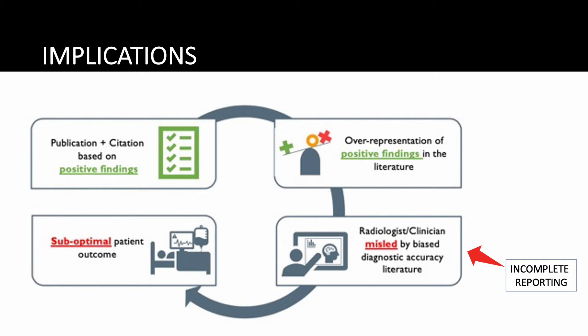Why does any of this matter? Preferential or expedited publication of positive findings can skew the balance of the published literature, resulting in overestimation of test accuracy. Incomplete reporting compounds the issue by preventing critical appraisal and risk of bias assessment. Ultimately, there's potential for adverse clinical outcomes for patients. In an ideal editorial process, studies with more complete reporting would be favored, while positive results and conclusions would be irrelevant to the success of submissions.